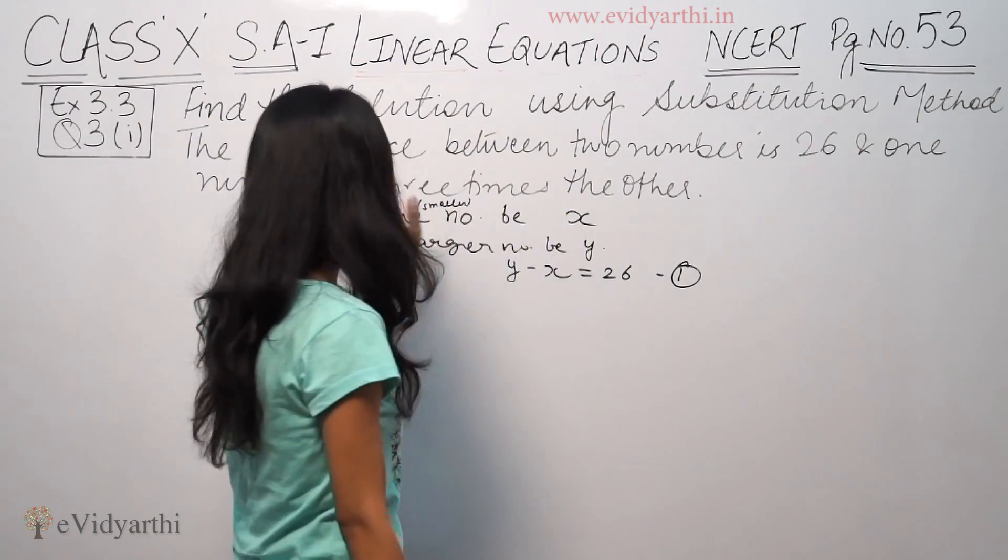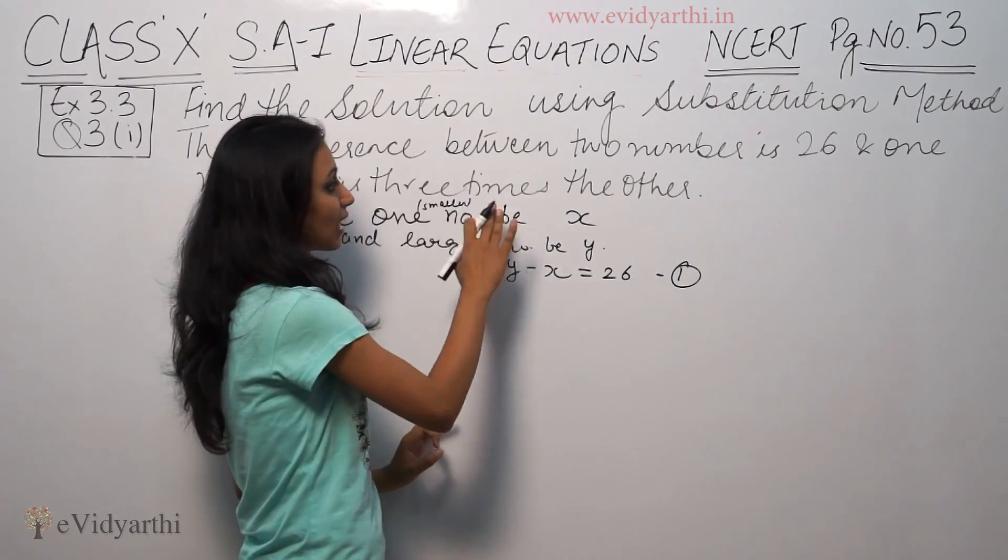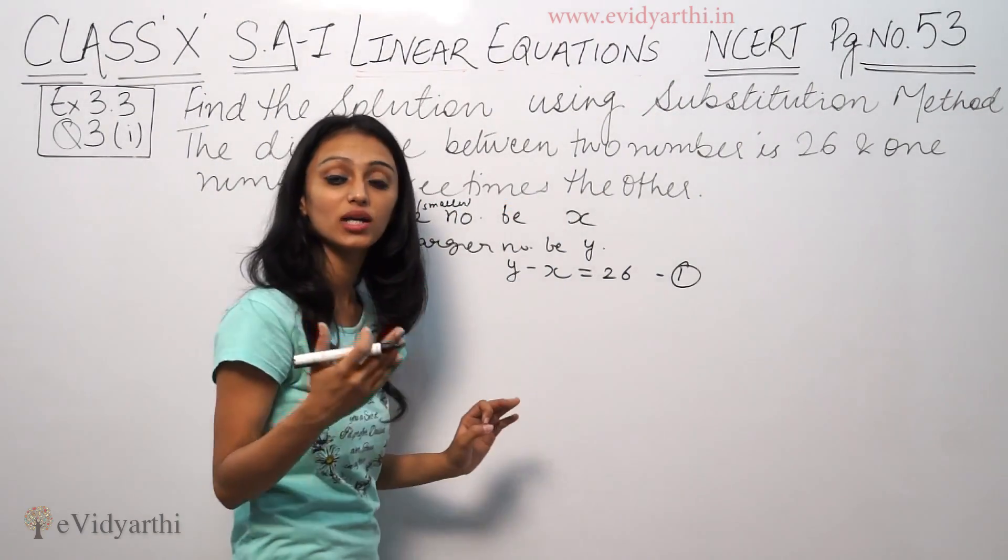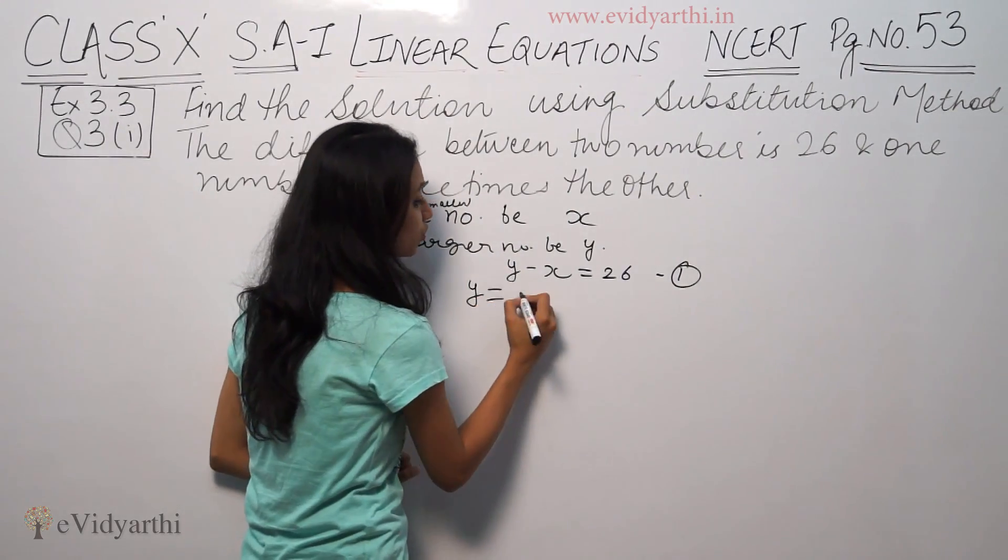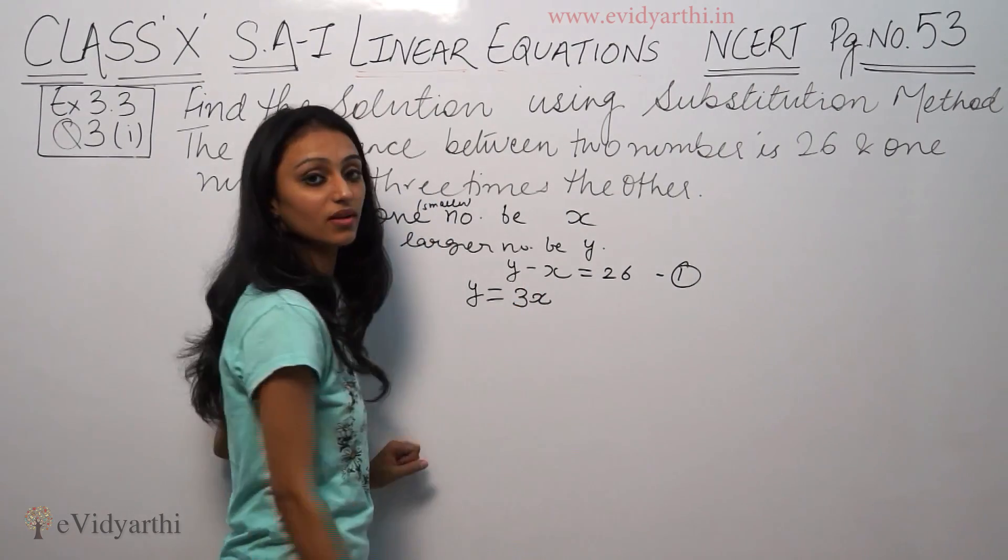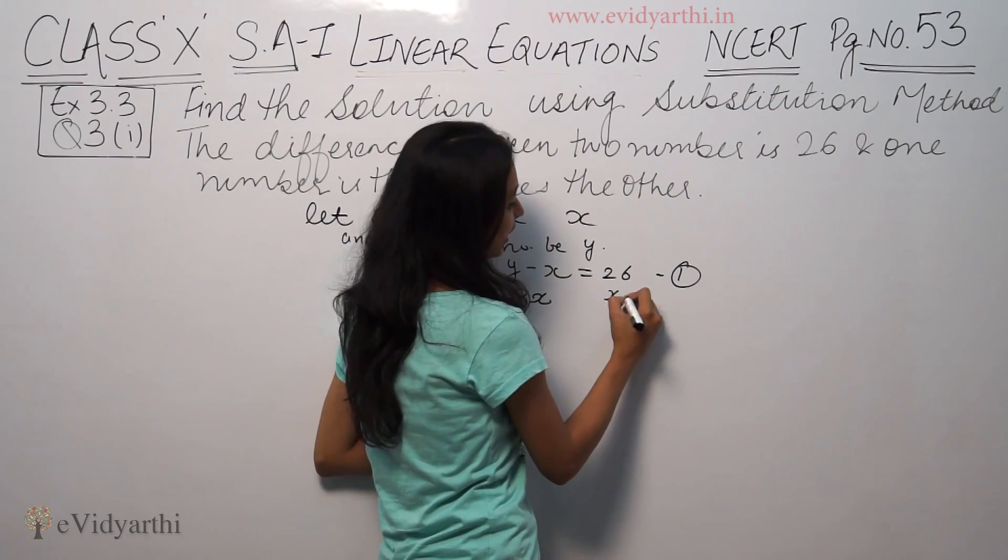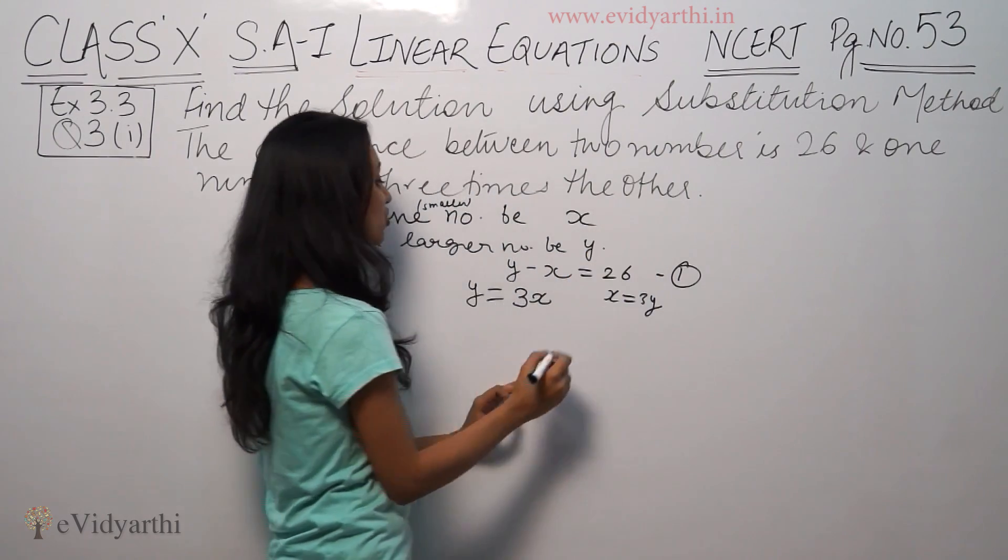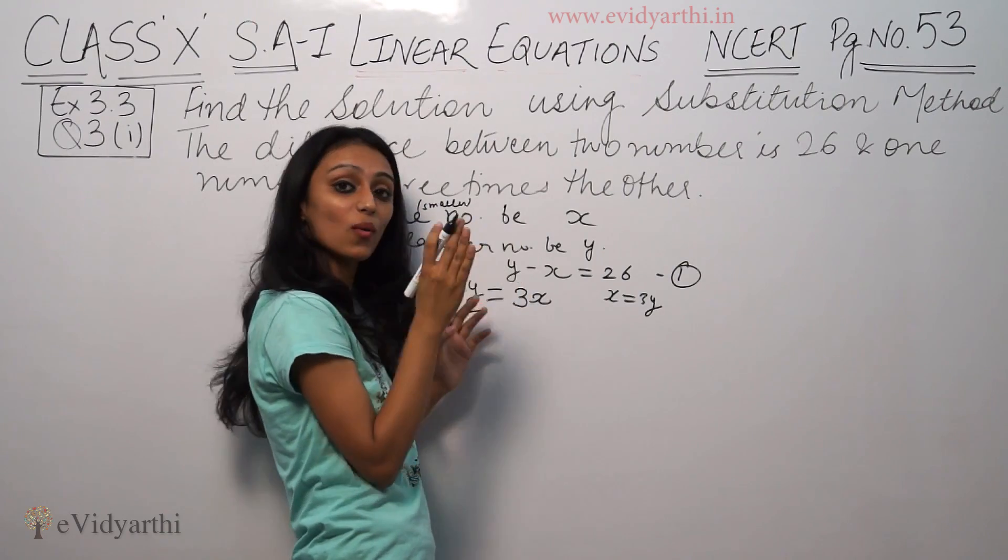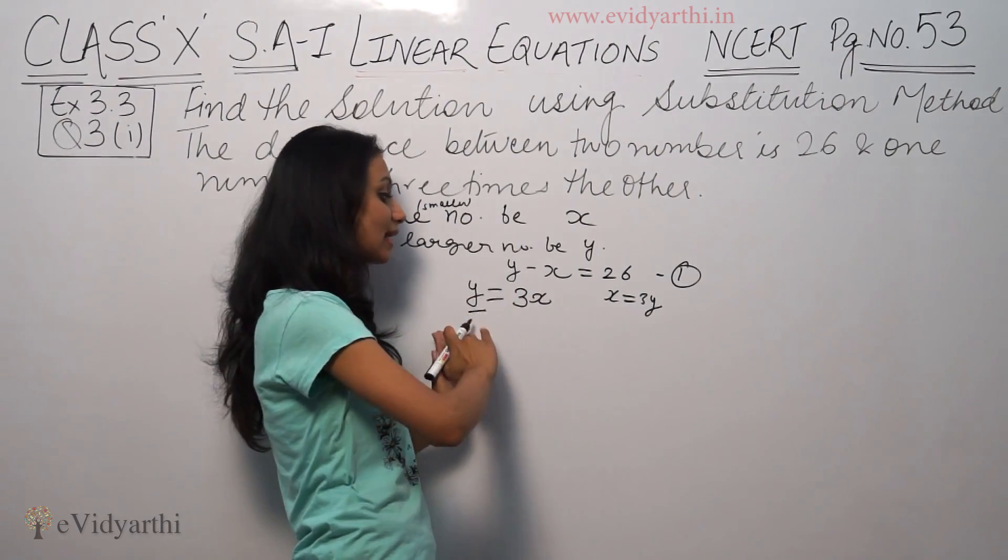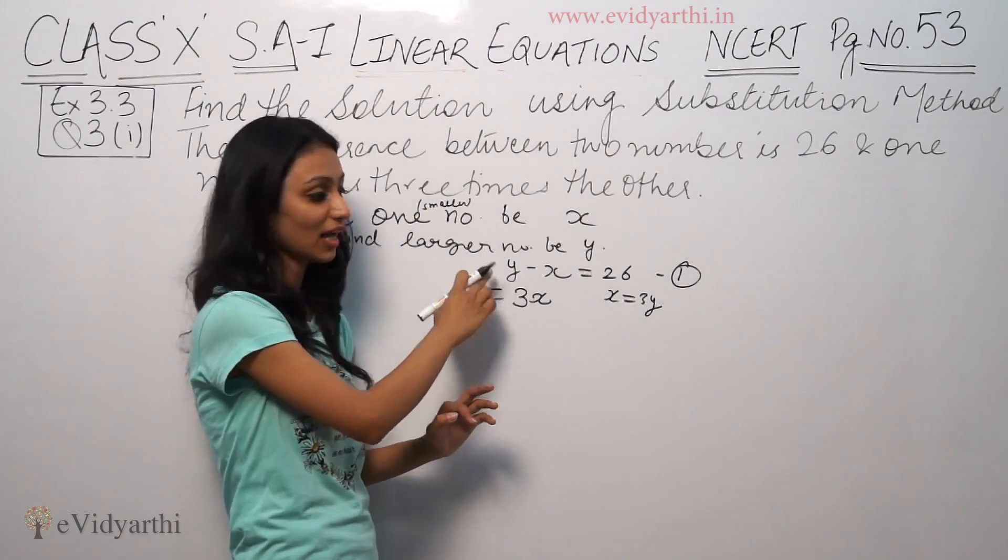One number is three times the other, so y equals 3x. You might write x equals 3y, but when the larger number is y, you write y equals 3x. The larger number is three times the smaller.